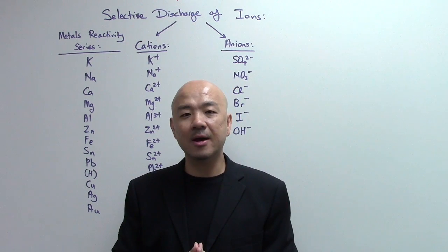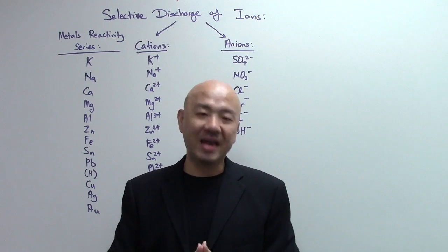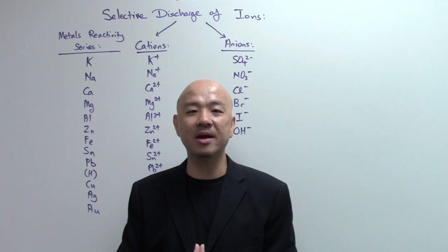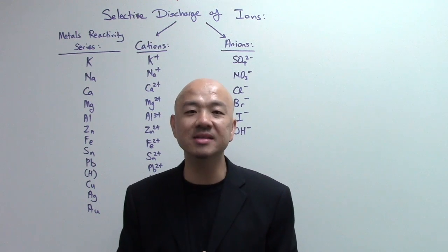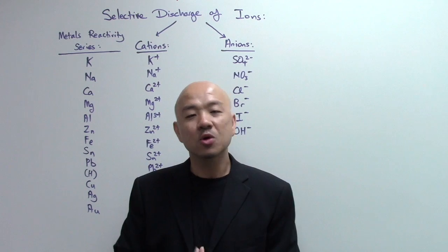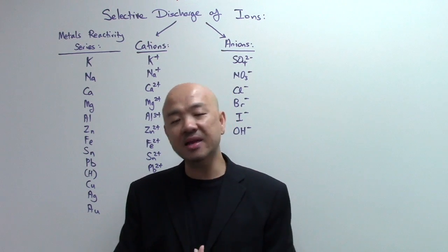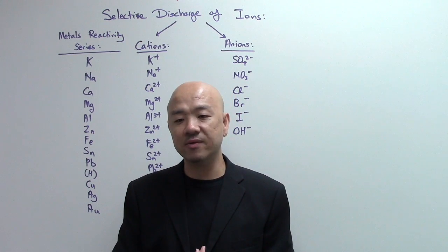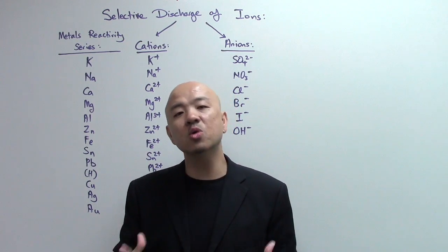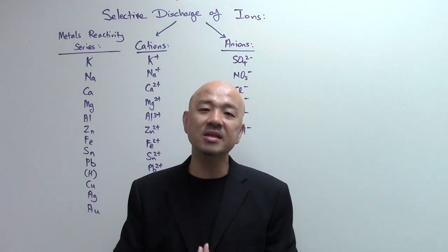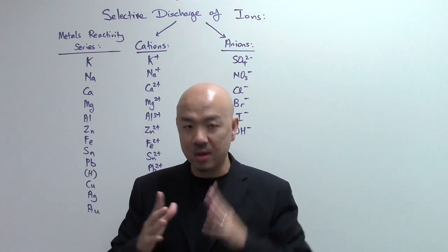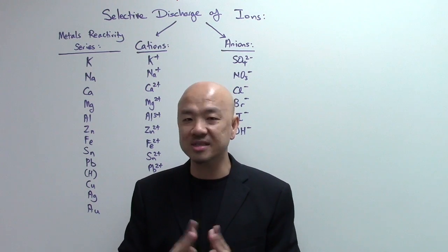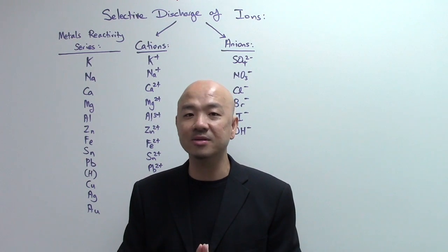For example, for the cations, let's say in the electrolyte solution you have both Na+ sodium ion and say Mg2+ magnesium ion. Which one will be selectively discharged? Similarly, for the anions, let's say you have chloride ions Cl-, and you have bromide ions Br-. Who will be selectively discharged? You can only discharge one cation and one anion each time. So let's take a look on the board to see how we do selective discharge of ions.